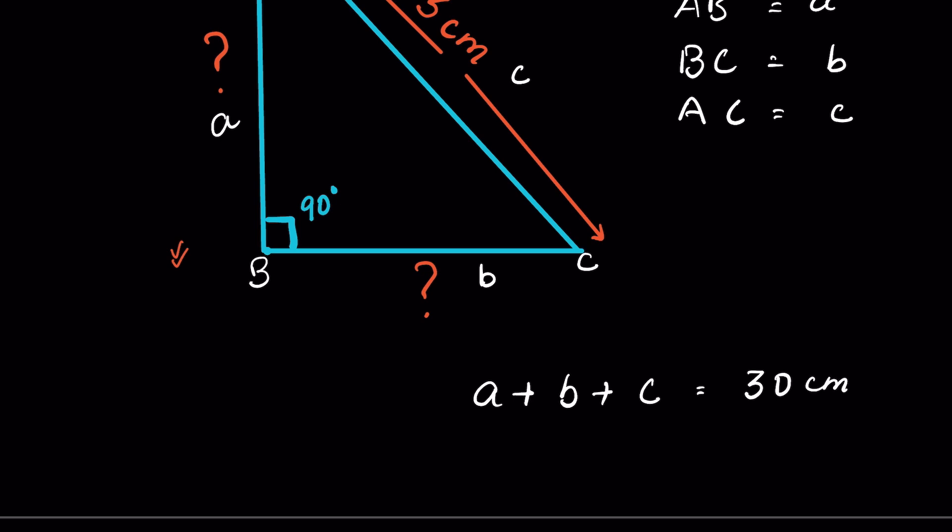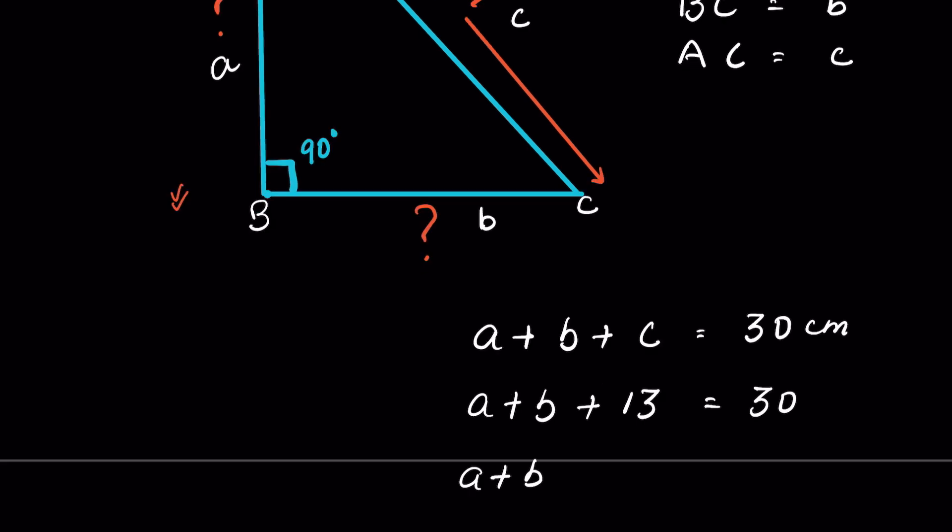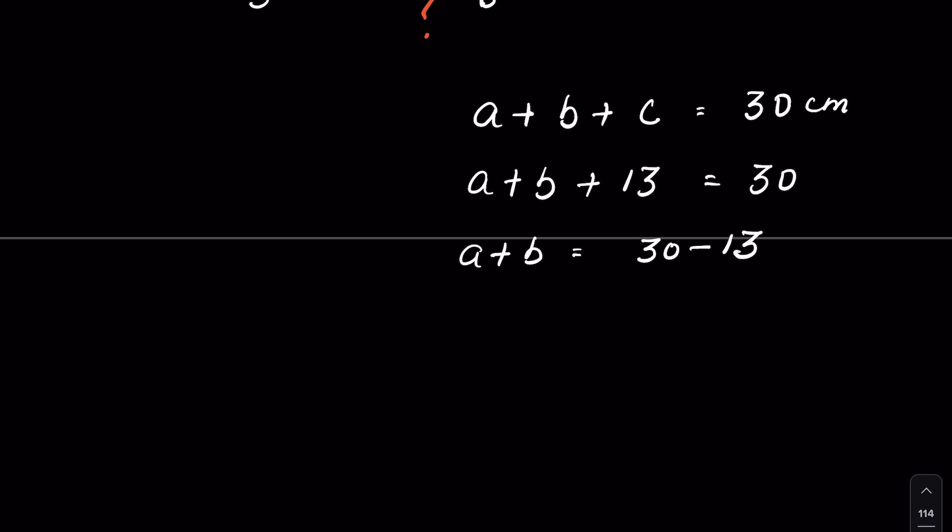Let the unit be centimeters. Given c here is 13, so a + b + 13 = 30, or a + b = 30 - 13, or a + b = 17.